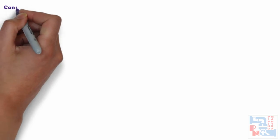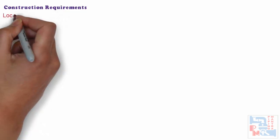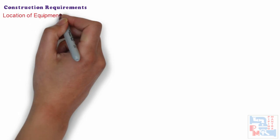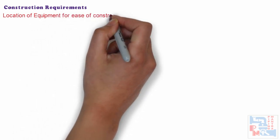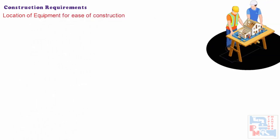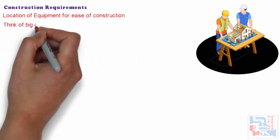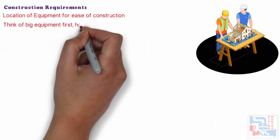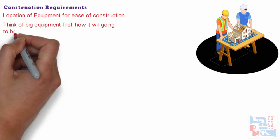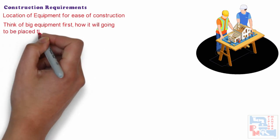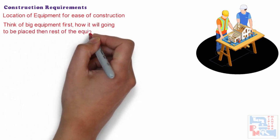Now let's see some construction requirement points. One should think of the location of equipment for ease of construction — towers are always placed near a road for access of mobile cranes, placement of guide derricks, etc. We have to think of big equipment first — how it will be placed — then the second biggest, and so on for the rest of the equipment.